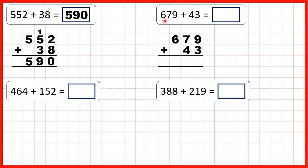Now let's try 679 plus 43. Again, we've got the question written out with the digits lined up on the right-hand side, with the 3 ones in 43 underneath the 9 ones in 679, and the 4 tens in 43 underneath the 7 tens in 679. So now we can start by adding our ones digits. 9 plus 3 is 12, but that's a two-digit number, so we need to write the first digit above the next place value column along.